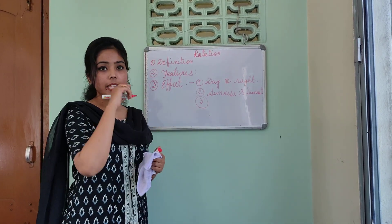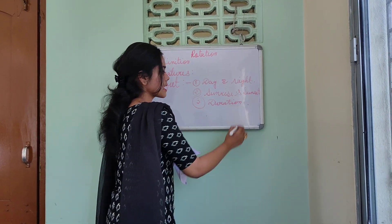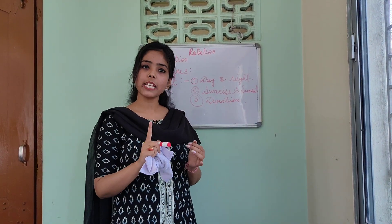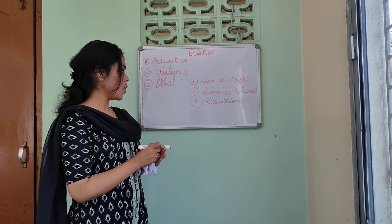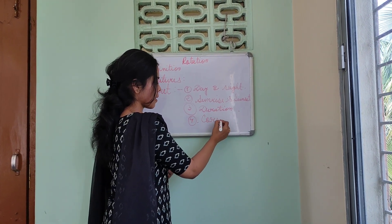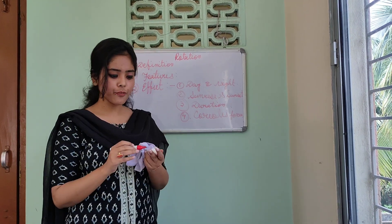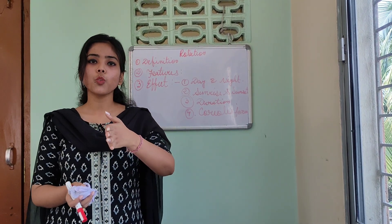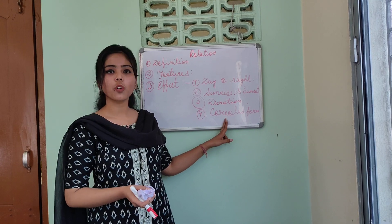The third effect is the duration of daytime and nighttime. We know that everywhere on Earth's surface, the daytime and nighttime cannot be the same. Why? Due to the rotation of Earth's surface. The fourth effect is Coriolis force. Every moving object on Earth's surface cannot move in a straight way because of a certain type of force — the Coriolis force.